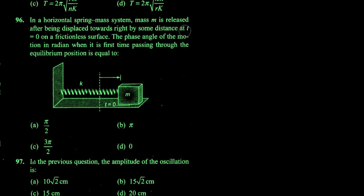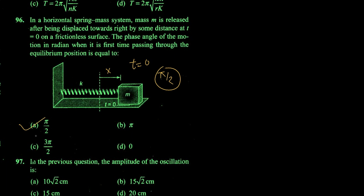In a horizontal spring-mass system, the mass is released after being displaced to the right by some distance at t = 0. When it first passes through the equilibrium position, the phase angle of the motion in radians is π/2, since going from extreme to mean position corresponds to a phase difference of π/2. Your answer is option A.